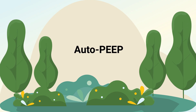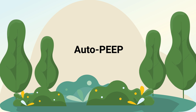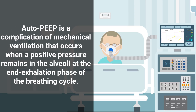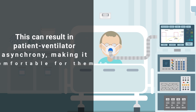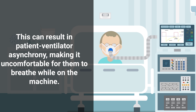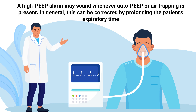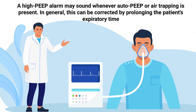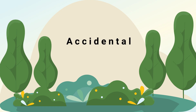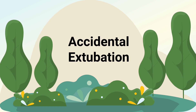Another common problem to be aware of is auto-PEEP. Auto-PEEP is a complication of mechanical ventilation that occurs when positive pressure remains in the alveoli at the end of the exhalation phase of the breathing cycle. This can result in patient-ventilator asynchrony, making it uncomfortable for the patient to breathe while on the machine. A high PEEP alarm may sound whenever auto-PEEP or air trapping is present. In general, this can be corrected by prolonging the patient's expiratory time.